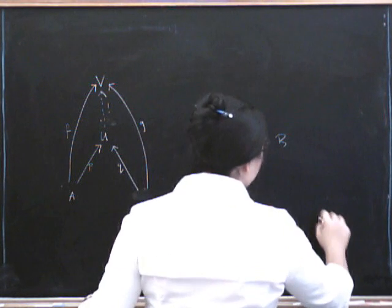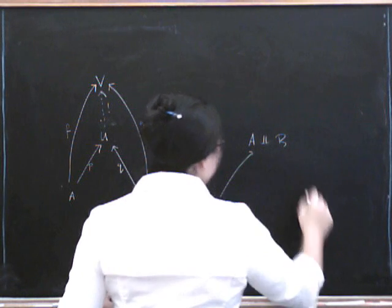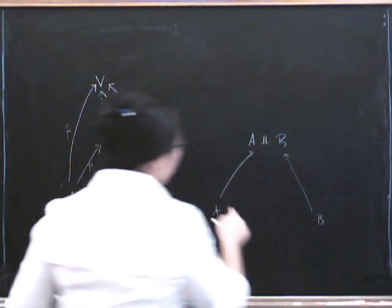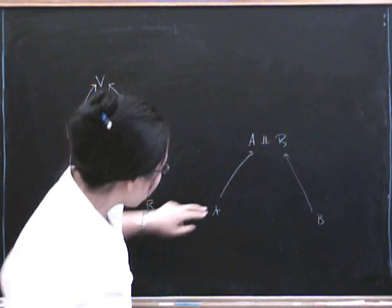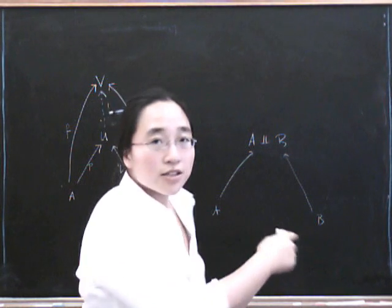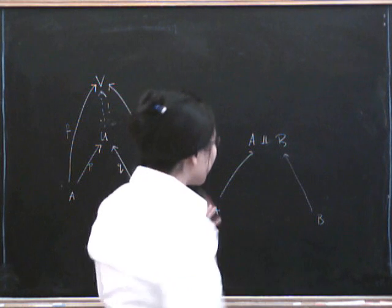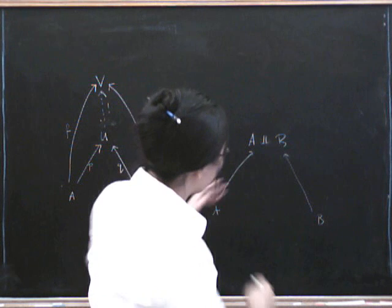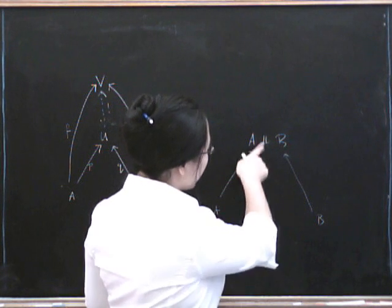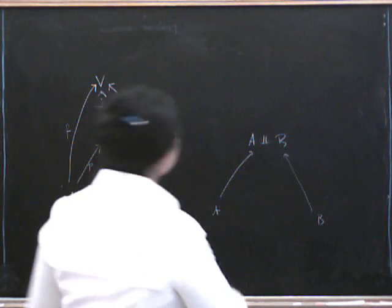So let's just have a little look at how disjoint union is a co-product in sets. So first of all, we certainly do have canonical insertion maps. A sits inside the disjoint union of A and B, in a completely canonical way. And B sits inside the disjoint union of A and B, that's why they're called insertion maps. Each element here just goes to the copy of itself in the disjoint union.